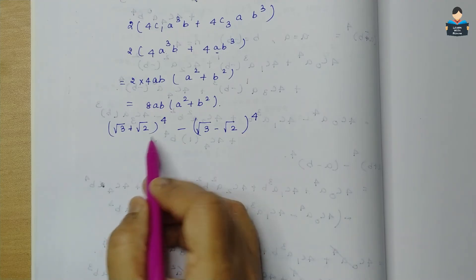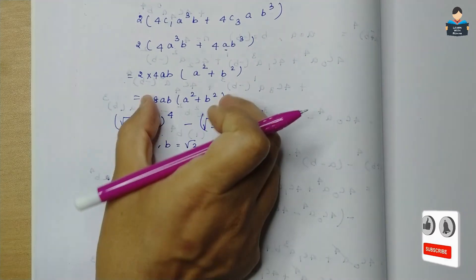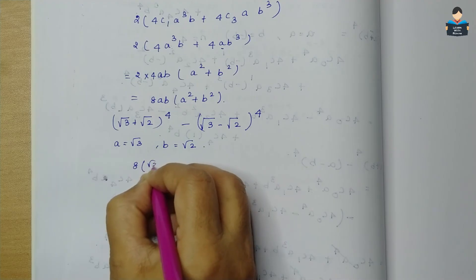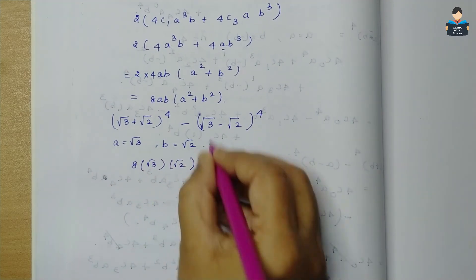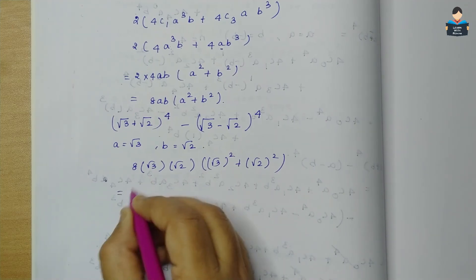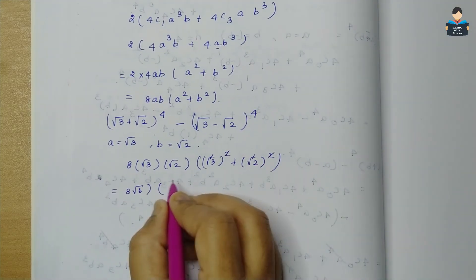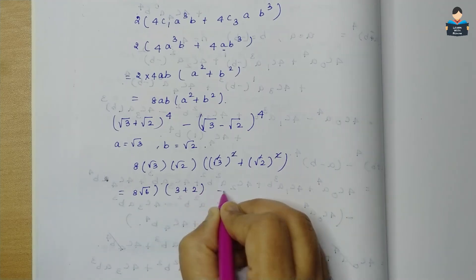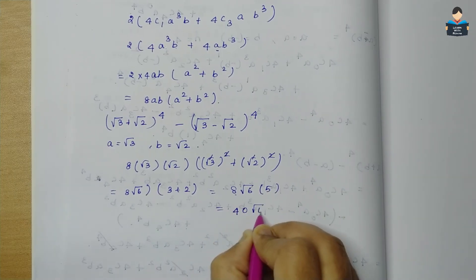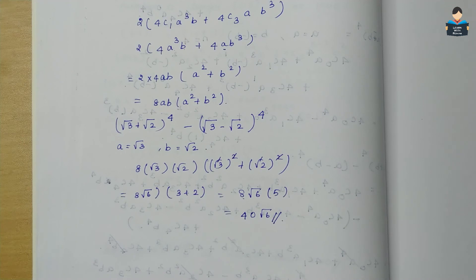So 8 · √6 · 5 = 40√6. The final answer is 40√6. This completes the 11th sum and the video.